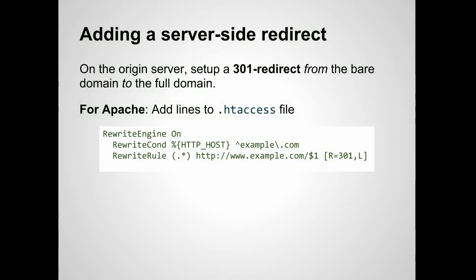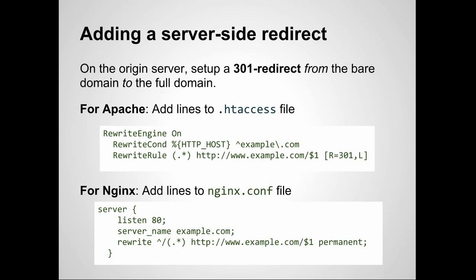If your web hosting service uses Apache servers, modify its .htaccess file as shown here, replacing the string example.com with the name of your domain. If your hosting service uses nginx web servers, add the lines shown to your nginx.conf configuration file, again replacing the string example.com with the name of your domain.